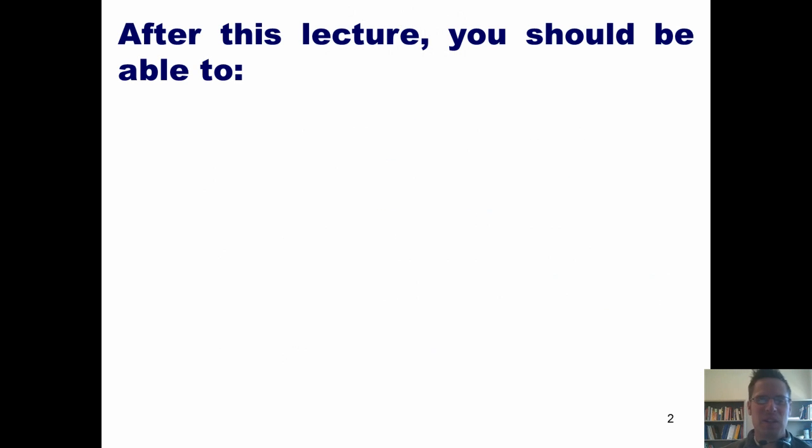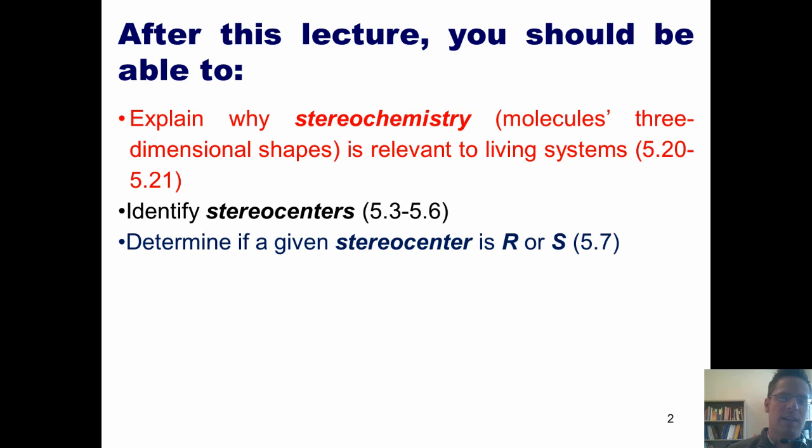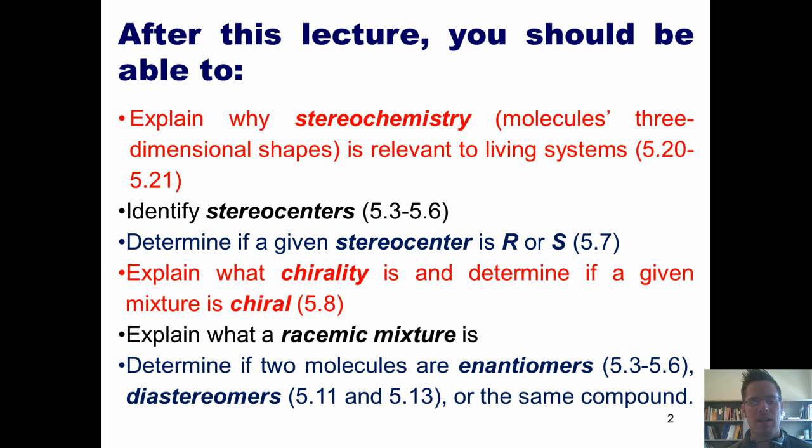After today's lecture, you guys should be able to explain why stereochemistry, which is a fancy word for molecules' three-dimensional shapes, is relevant to living systems. Identify stereocenters in molecules. Determine if a given stereocenter is R or S. Explain what chirality is and determine if a given mixture is chiral. Explain what a racemic mixture is and determine if two molecules are enantiomers, diastereomers, or the same compound.